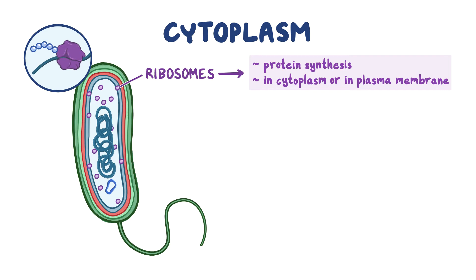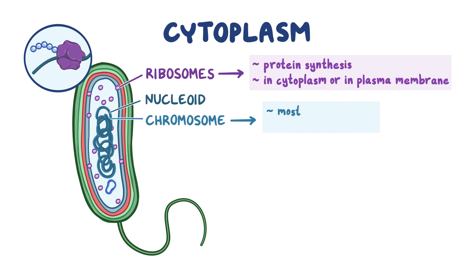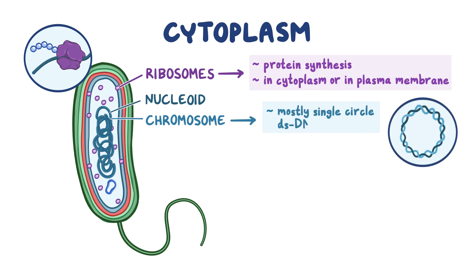Another structure found in the cytoplasm is the nucleoid, which is an irregularly shaped region that contains the cell's chromosome. The chromosomes of most bacteria are a single circle of double-stranded DNA, but some bacteria can have a linear chromosome, while others can have more than one chromosome. These chromosomes contain the genes needed to provide instructions for protein synthesis in the cell.